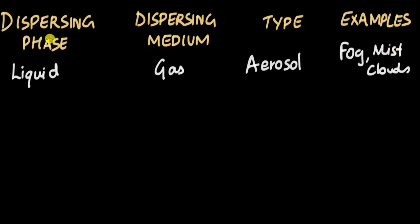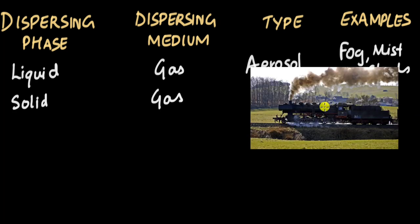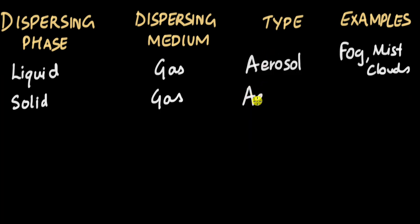Now let's take the dispersing phase as solid and the dispersing medium as gas. In this case, what you get is smoke — smoke or exhaust fumes coming out from trains or cars. This type of colloid is also called an aerosol. Examples include smoke and automobile exhaust fumes.